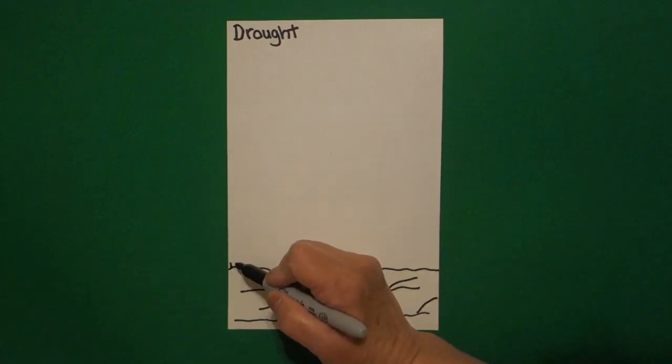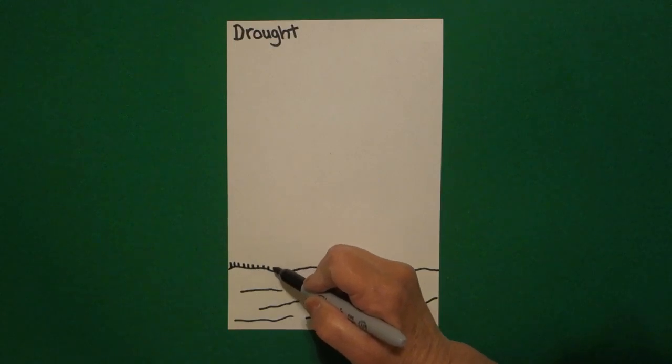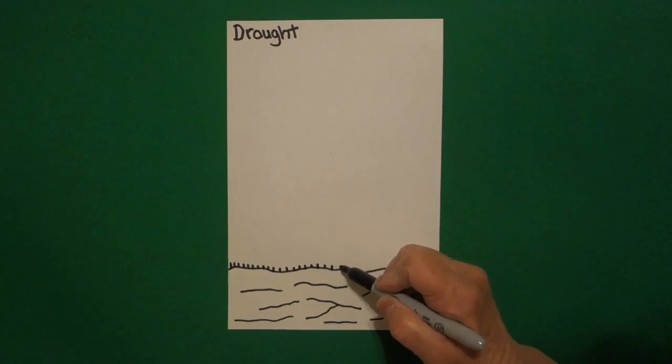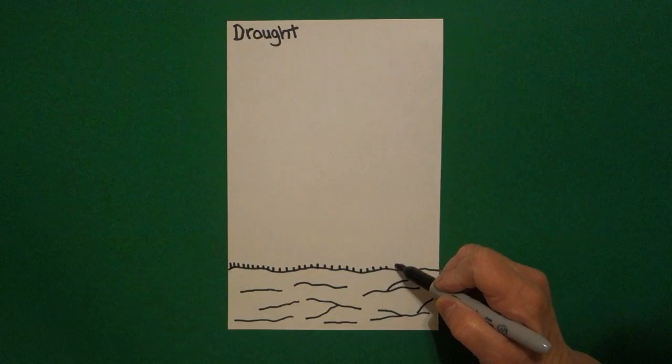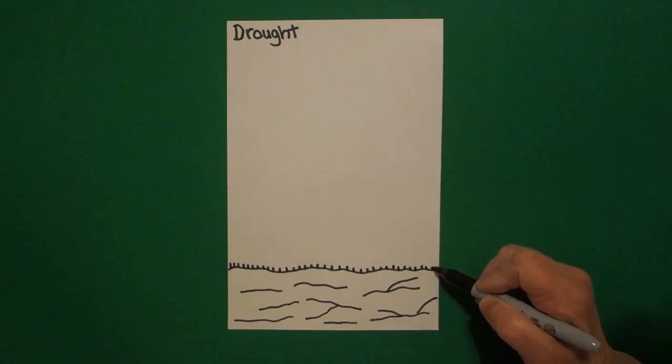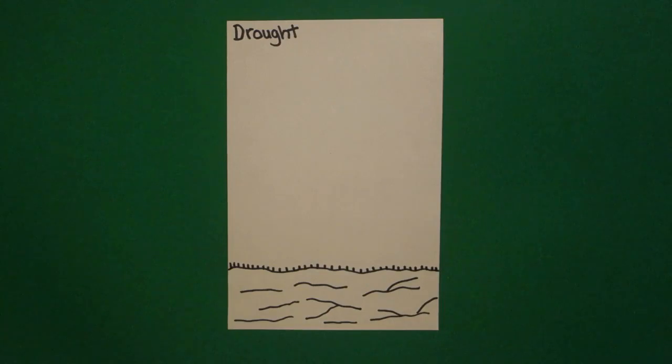Then I come right above and I put little tiny straight lines all the way across. Because what happens in a drought is that the plants do grow, but they don't grow very big and they're not very green. But there is some growth, but sometimes that works against you, which we'll see in just a minute.